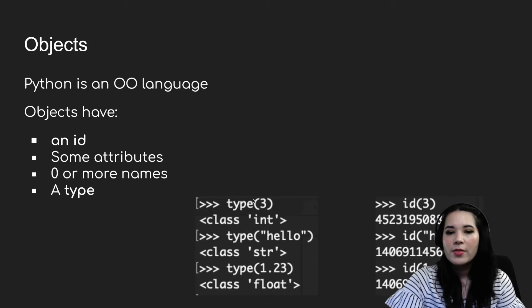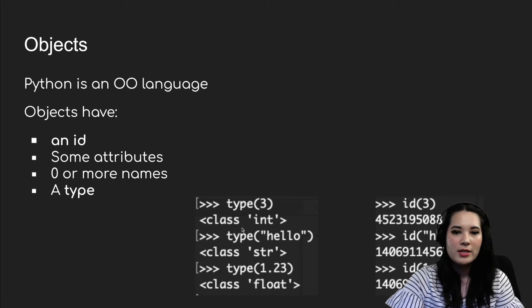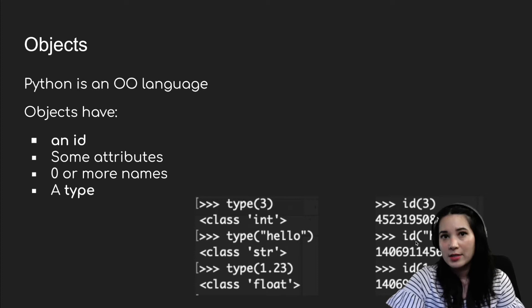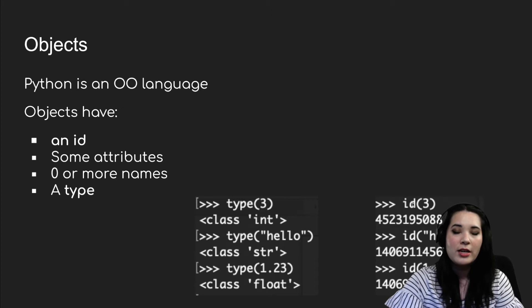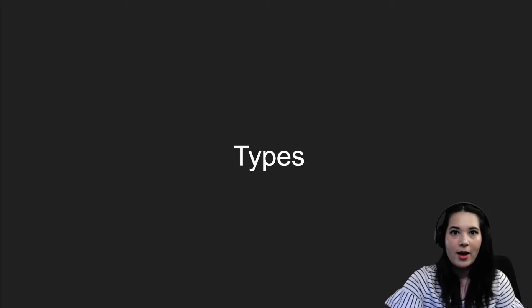You can see in the output boxes here that we can have different objects in Python like the integer 3, the string hello, and the floating-point number 1.23. When we ask Python what type each of these objects is, we get back integer, string, and float. We also have IDs for all of our objects — if you ask Python for the ID of an object using the ID function, it will spit out the ID or address of that item.